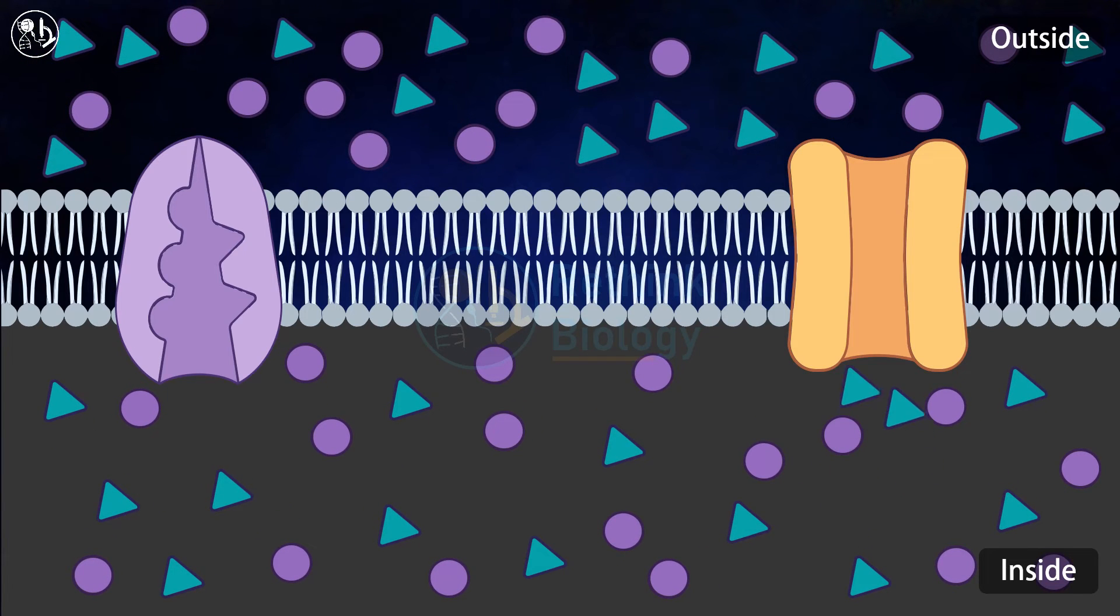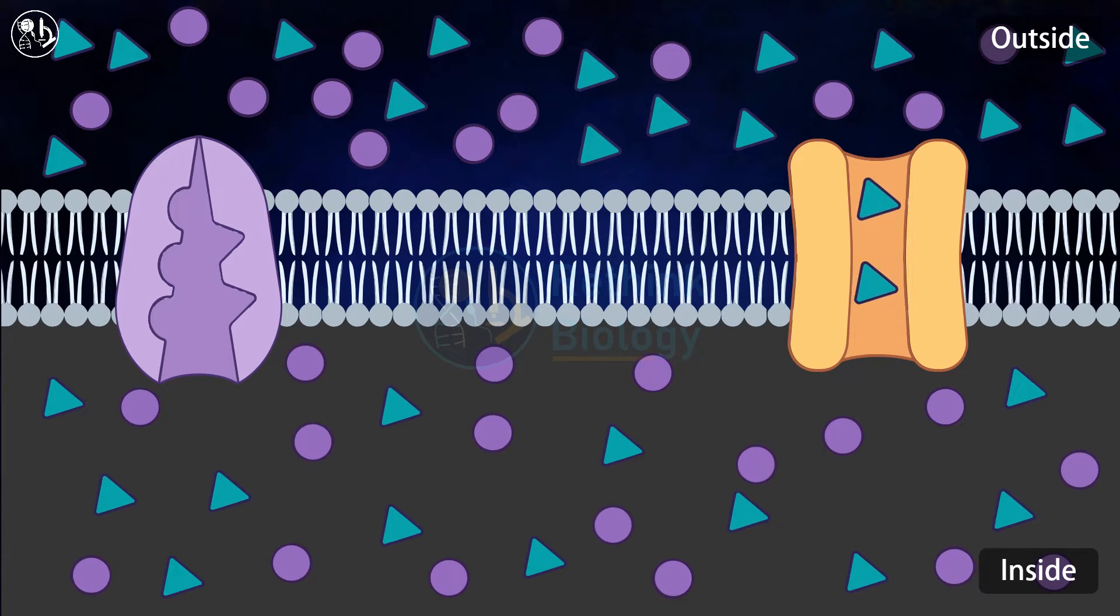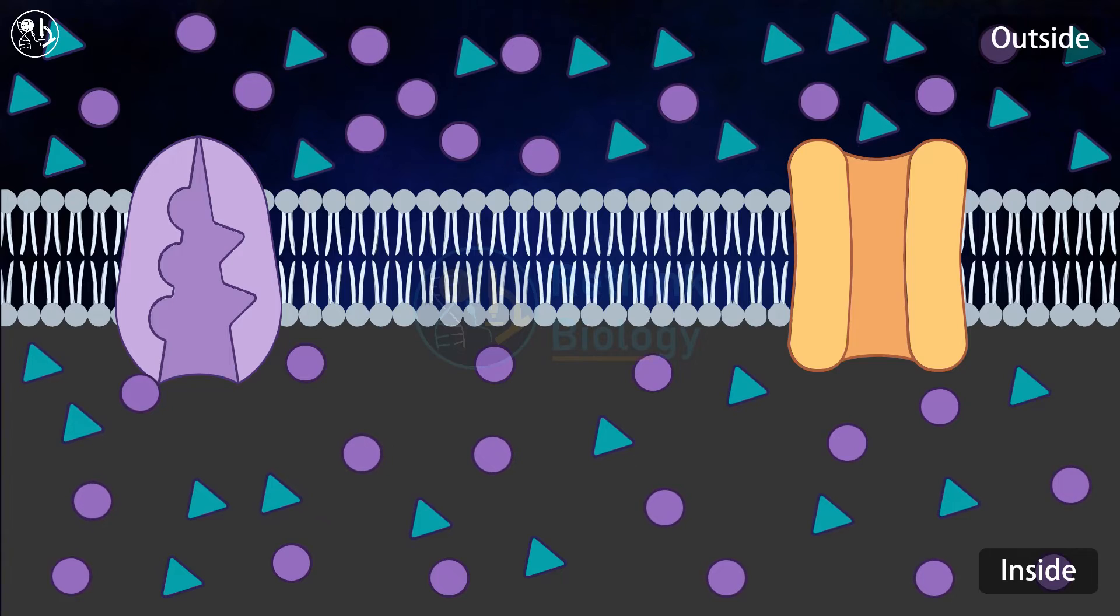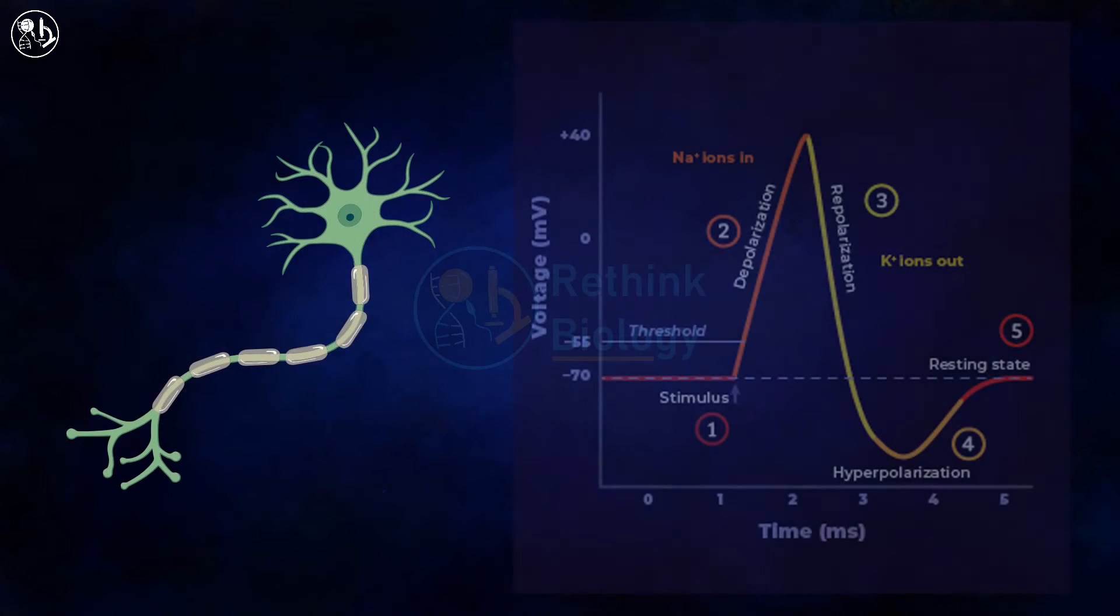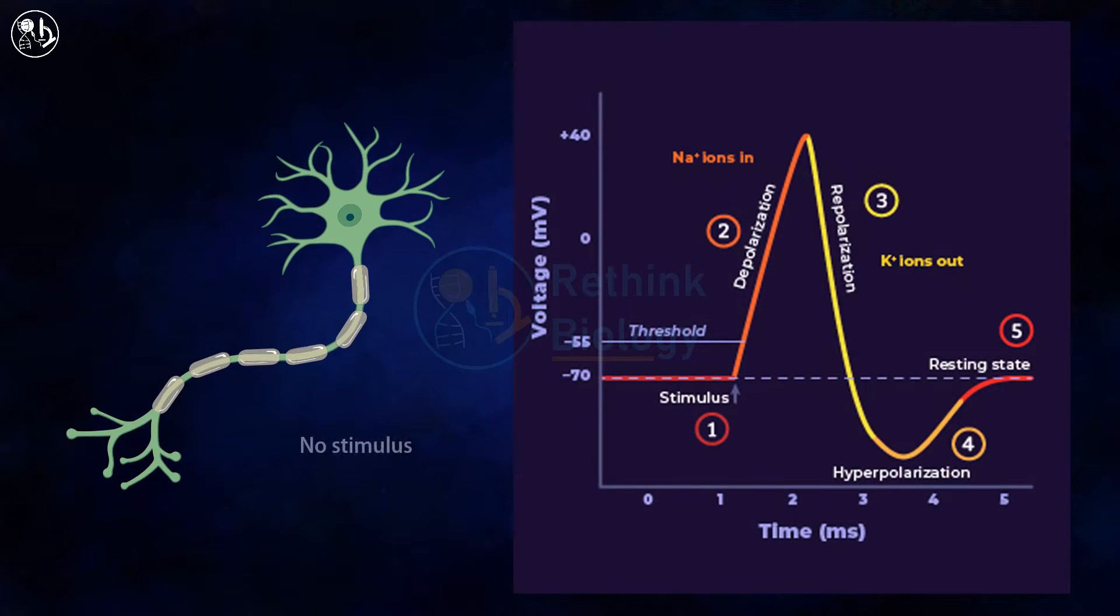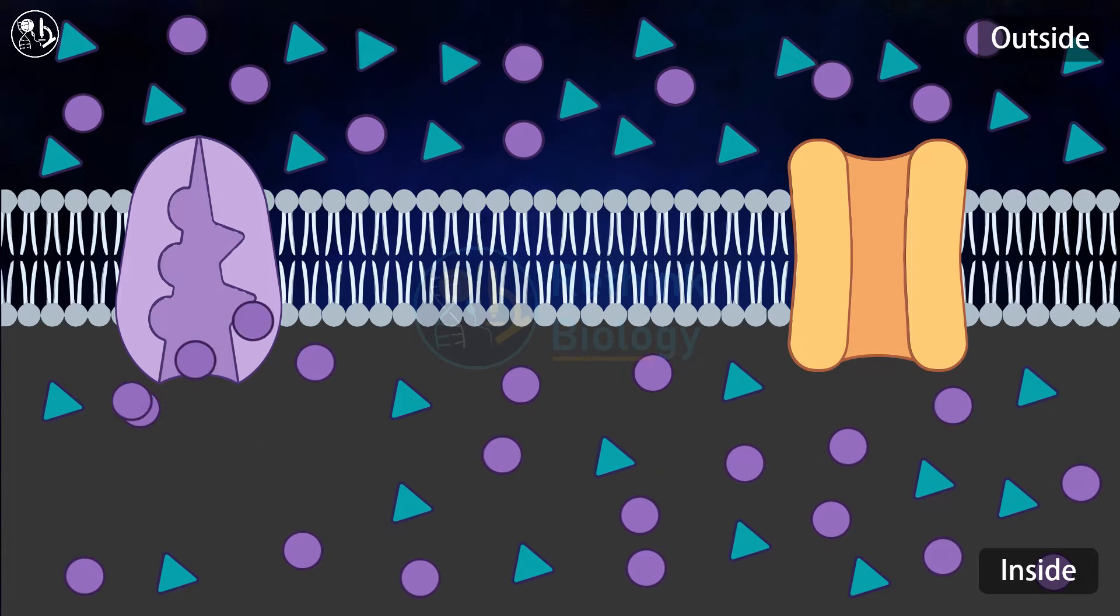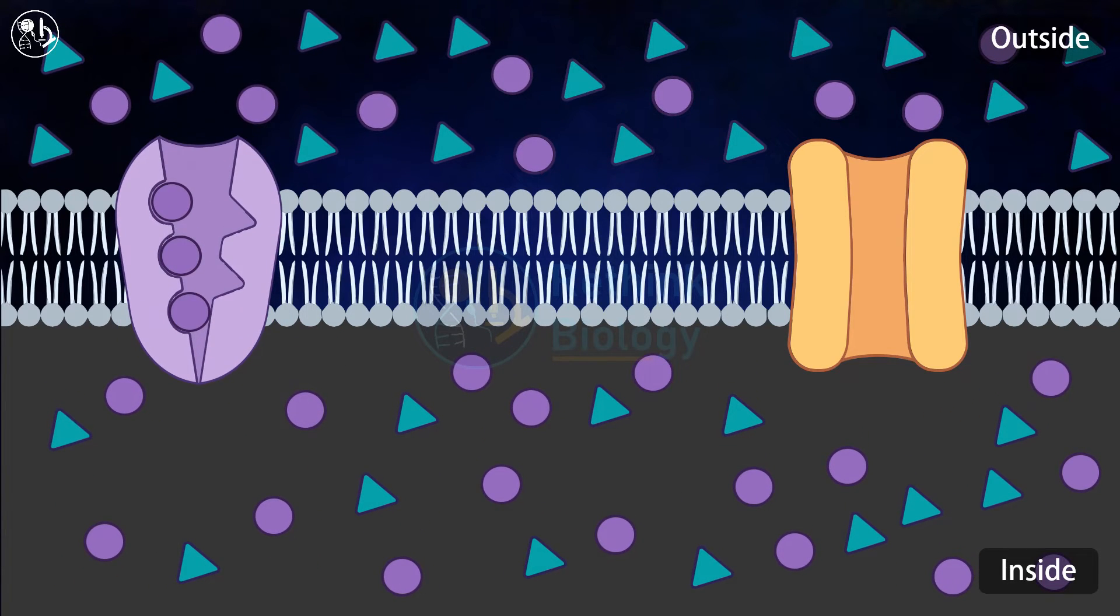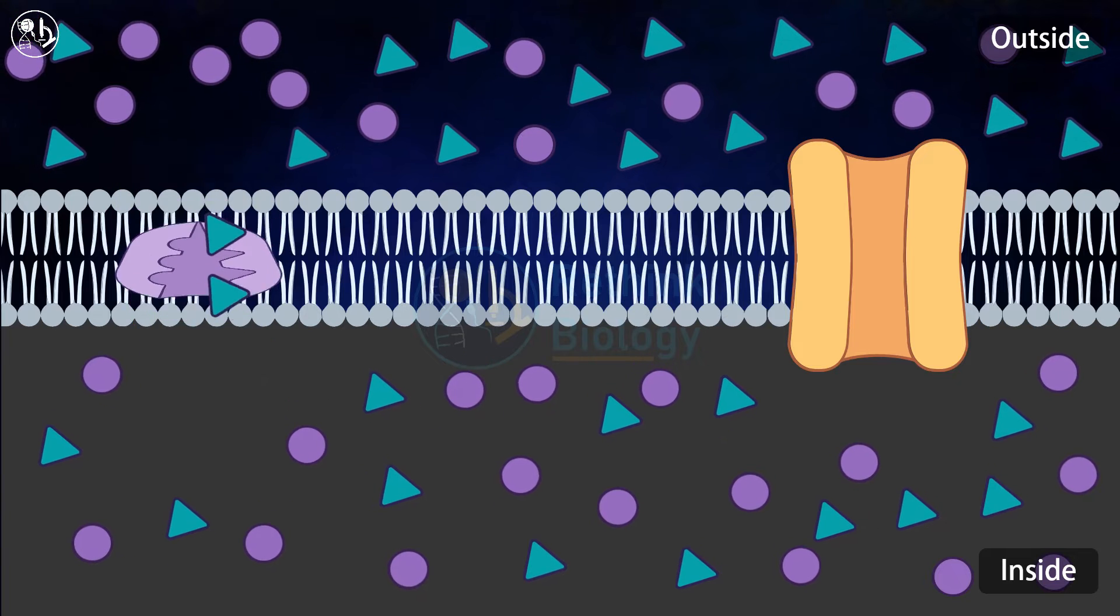Whereas potassium leaky channels send potassium ions outside the cell. The chemical force produced by unequal concentration of ions across the membrane leaves behind unbalanced negative charge within the cell. Thereby, these two major forces create membrane potential referred to as resting potential.